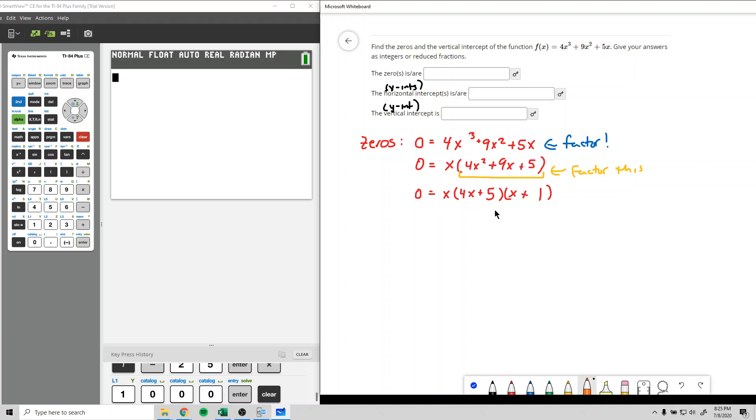But this is stuff that we've been doing throughout the entire course. You can use ac method, guess and check, whatever you like. Maybe you can see this would work out because we would get the 5x and then the 4x would make the 9x.